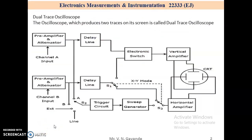Dual-trace CRO. The oscilloscope which produces two traces on its screen is called a dual-trace oscilloscope. The CRT of a dual-trace oscilloscope consists of a set of vertical plates and another set of horizontal plates, called deflection plates.